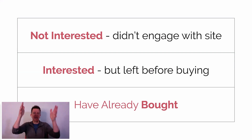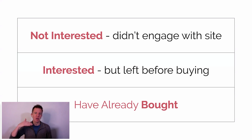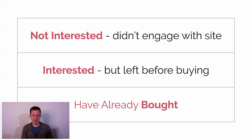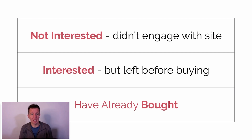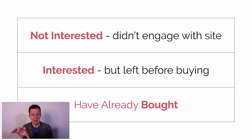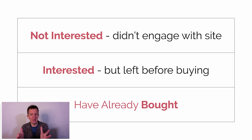Thinking about intent first, as people fall down the funnel with more intent, we split everyone into three buckets. At the top are people who were not interested — those who bounced, just one page view, came and left. That might be 30–40% of your site. At the bottom are people who converted — who bought or filled in a form. The bit we're most interested in is the middle: people who showed a level of interest through some behavior, but haven't bought yet or haven't filled in a form yet if it's a lead gen site.